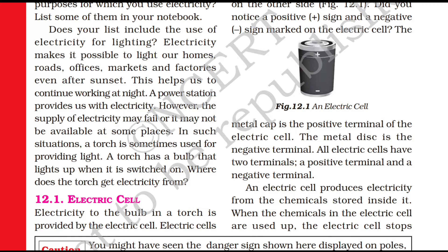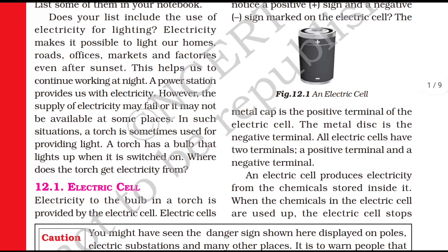Electricity powers bulbs, tube lights, AC, fridge, refrigerator. Electricity makes it possible to light our homes. It also helps us light roads, offices, markets, and factories - even after sunset. We use electricity to light all these places, which helps us continue working at night.